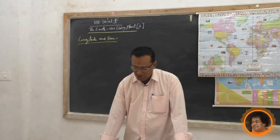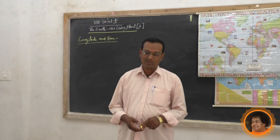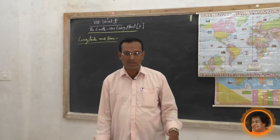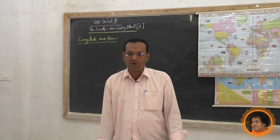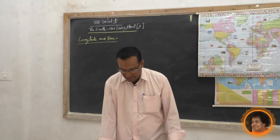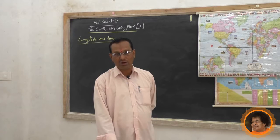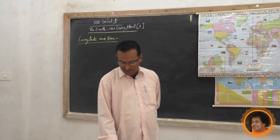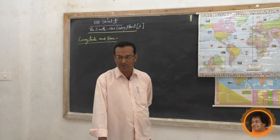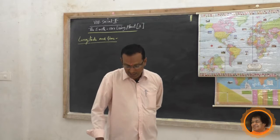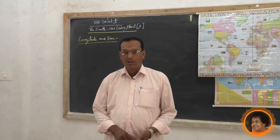In the same way, in the southern hemisphere, twenty-three and a half degrees latitude is known as the Tropic of Capricorn. Then sixty-six and a half degree north latitude is the Arctic Circle, and sixty-six and a half degrees in the southern hemisphere is the Antarctic Circle. Then ninety degrees is the North Pole, and ninety degrees in the southern hemisphere is the South Pole. Thus there are seven important latitudes.